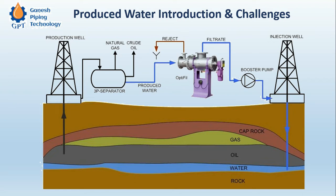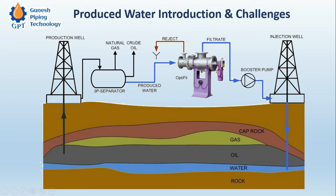This fluid is called the 'well stream.' The well stream comes from the well directly and is sent to the three-phase separator. The three phases are: solid, liquid-liquid, and gas. Sand is separated as the solid, natural gas is separated, crude oil is separated, and water is also separated. This water which comes out from the production pipe is called 'produced water.'